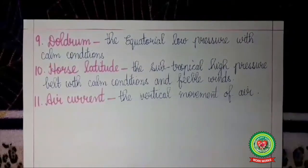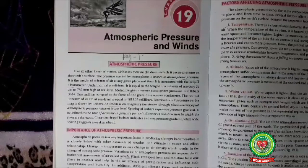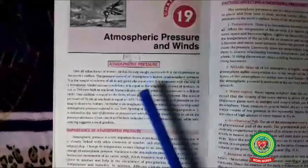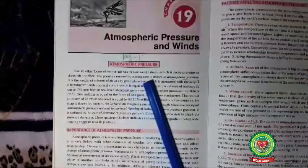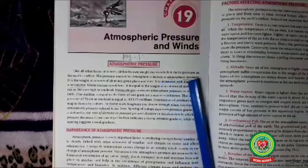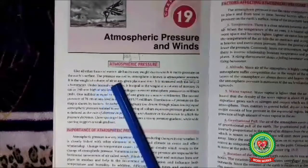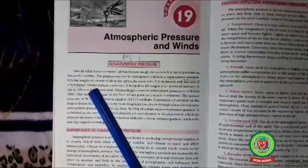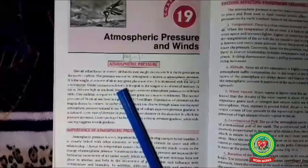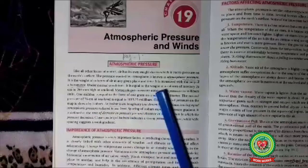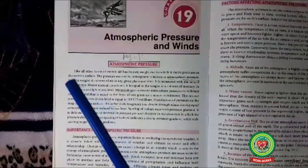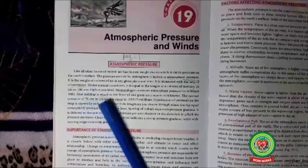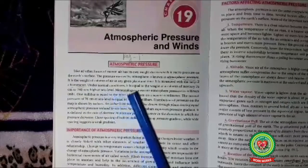Now let us start the chapter from page 270. Atmospheric pressure — air has its own weight, due to which it exerts pressure on the earth's surface. The pressure exerted by the atmosphere is known as atmospheric pressure. It is the weight of a column of air at a given place and time. It is measured with the help of a barometer. Under normal conditions, it is equal to the weight of a column of mercury 76 centimeters or 760 millimeters high at sea level.